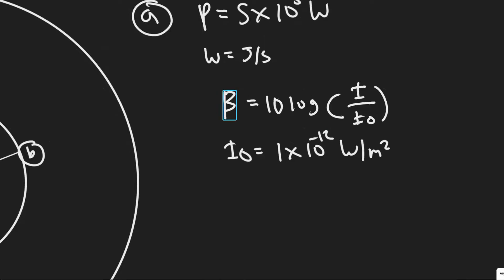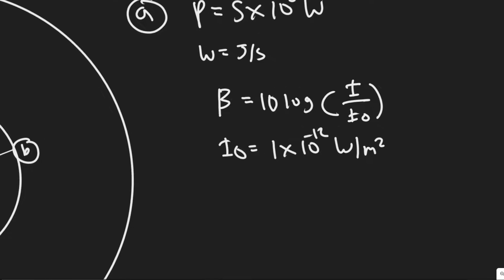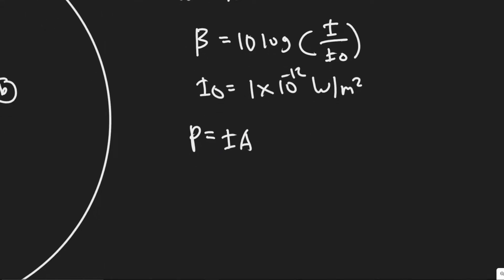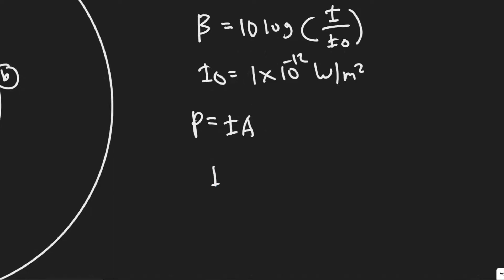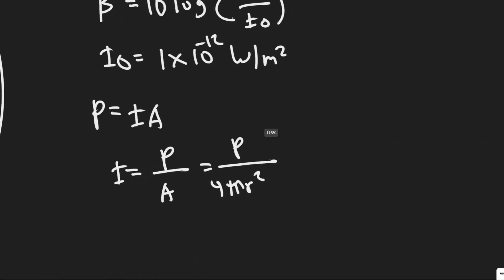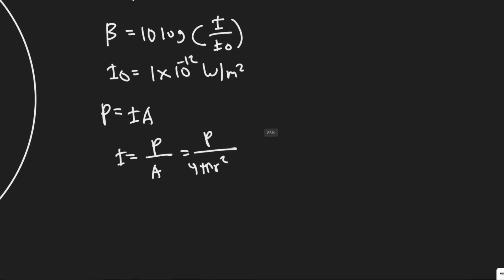To find the sound level beta, we first need to find the intensity. We'll use the formula P = I·A, so intensity equals power over area. For these problems, the area is 4πr², since the sound travels outward in a spherical pattern. We know the power — they give that to us — and we know the radius, so we can just plug in and solve.